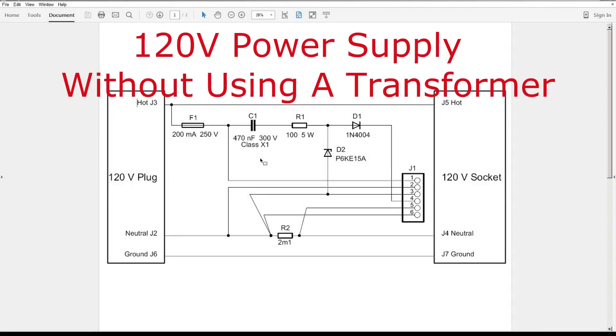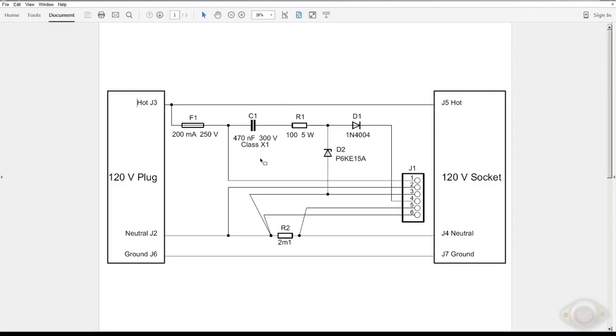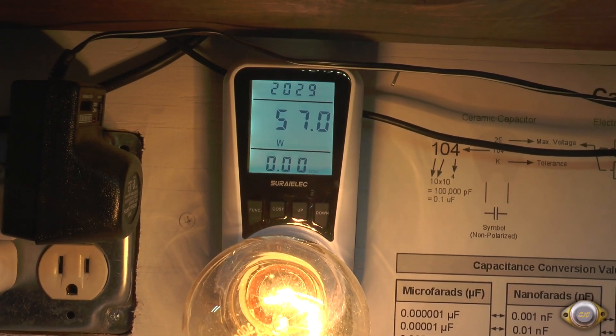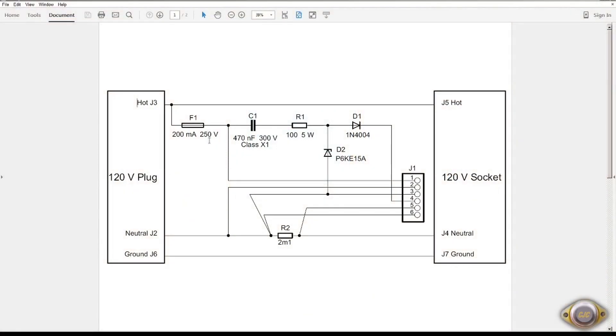I was looking into these transformerless power supplies that are used in some portable equipment. This particular one here is similar to what they use in the kilowatt measuring device - that device that plugs into the wall and then you plug a utility into it to measure how much current, how much power it draws. This is how they power the internal electronics inside the device.